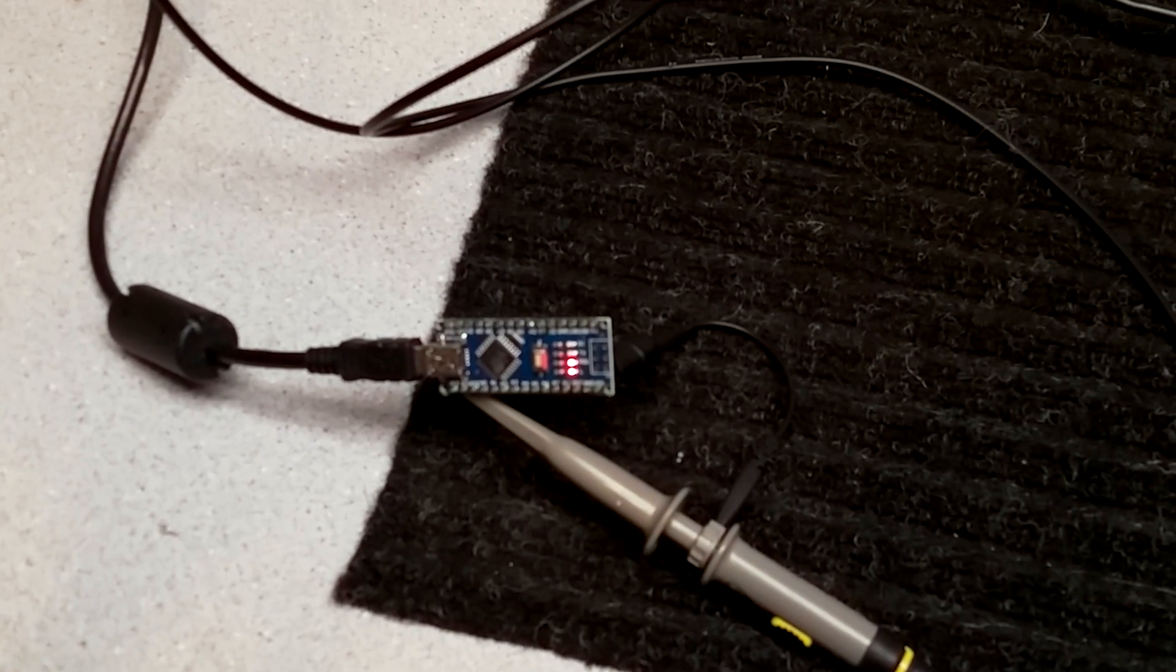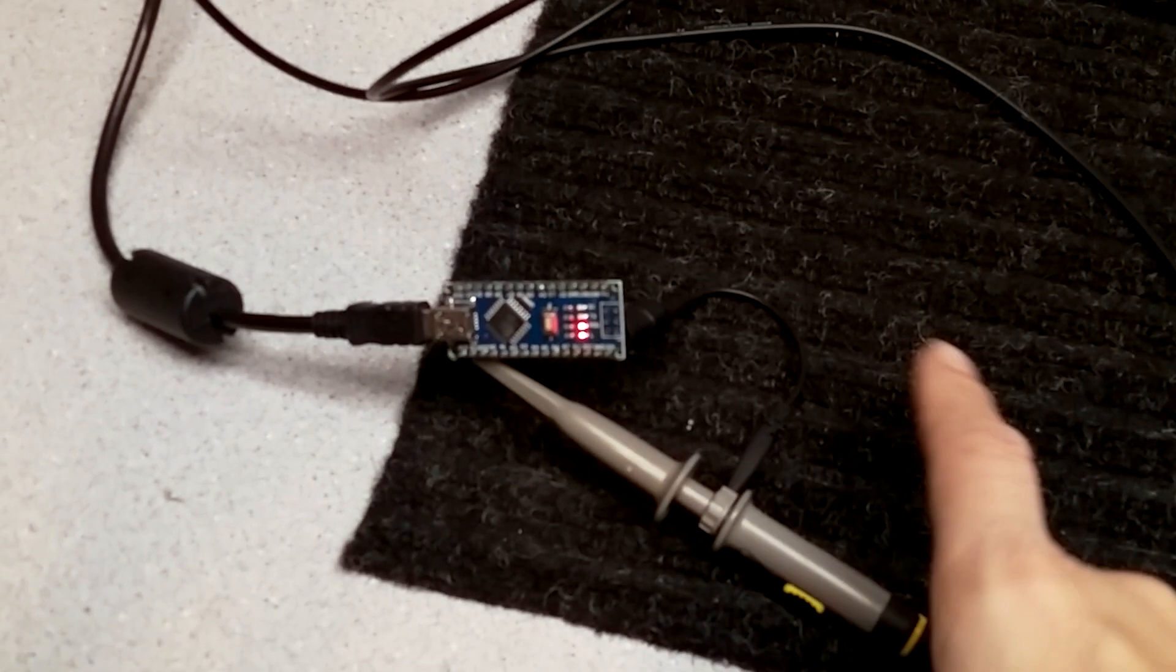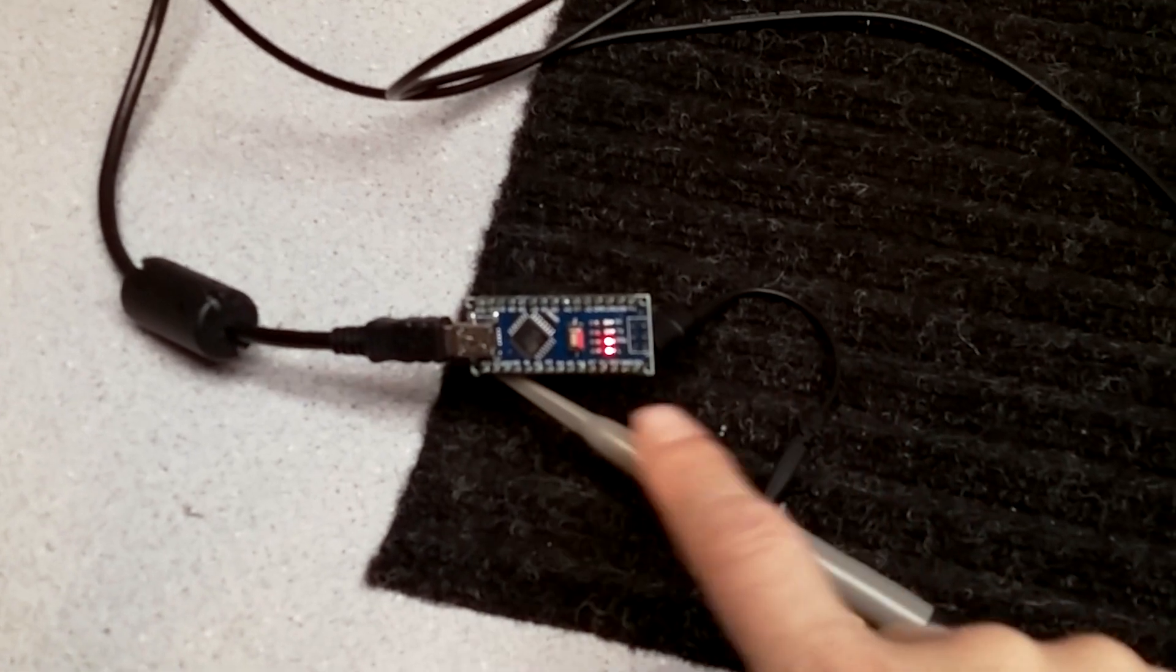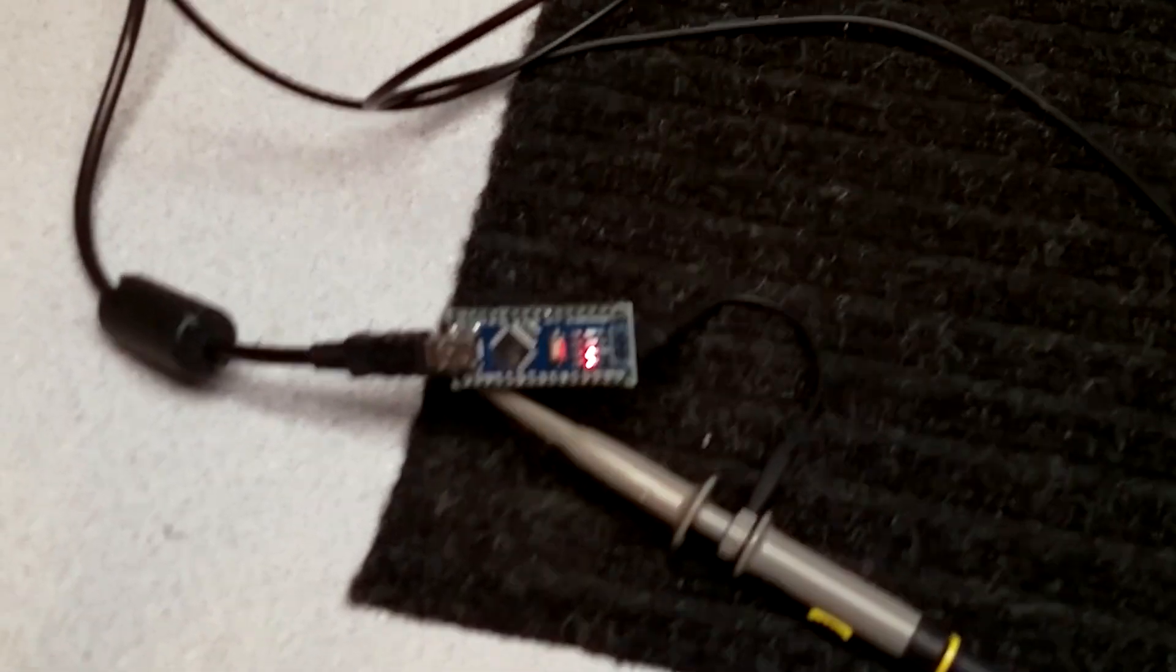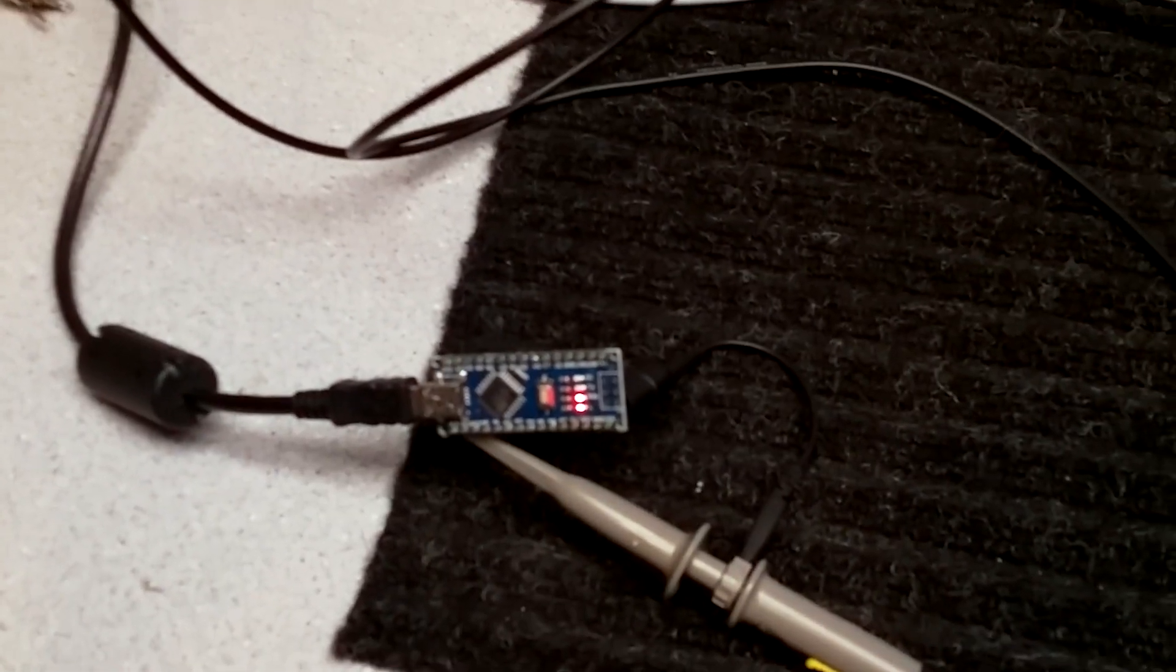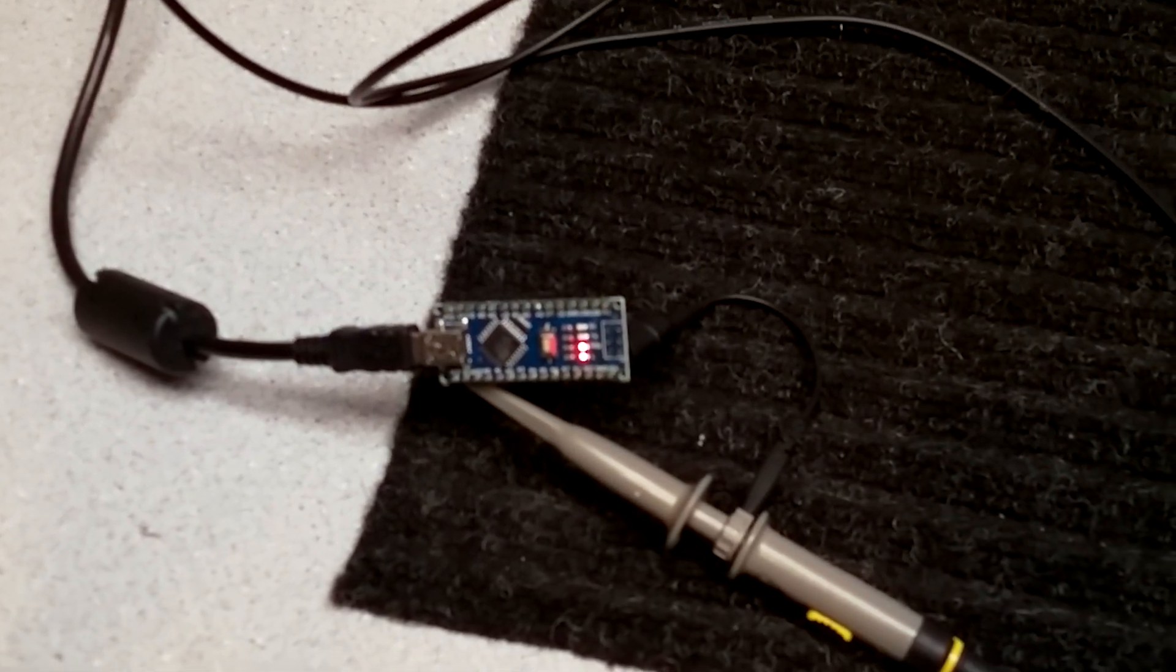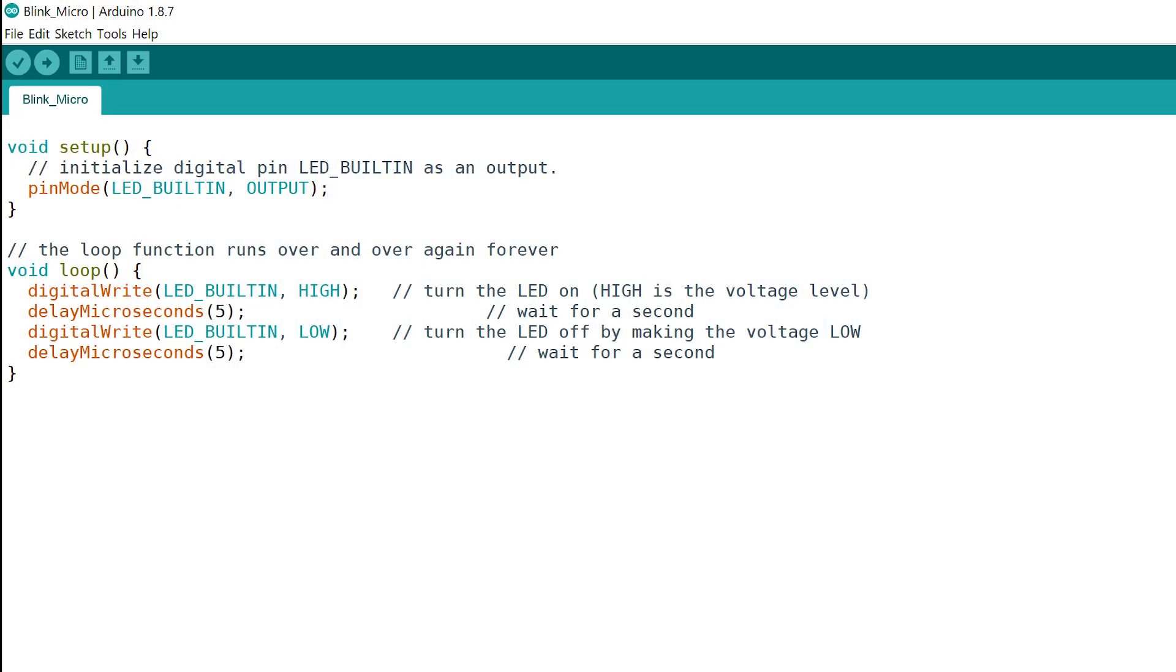My hardware setup is just the Arduino with the probe attached right to the pins to try to keep those corners nice and sharp. My sketch is just one of the default sketches, and you can see I've got five microseconds for high and five microseconds for low.